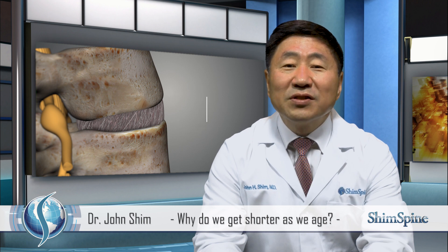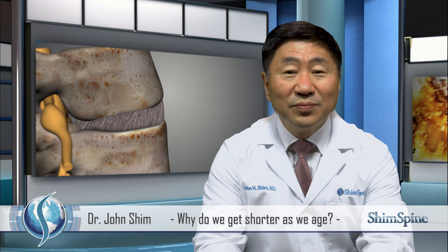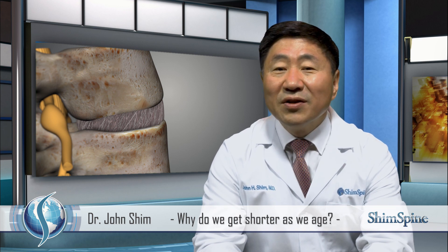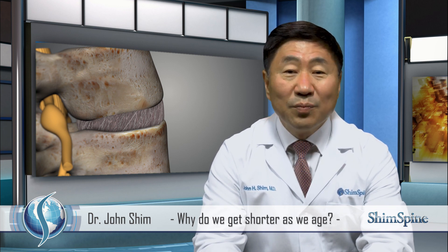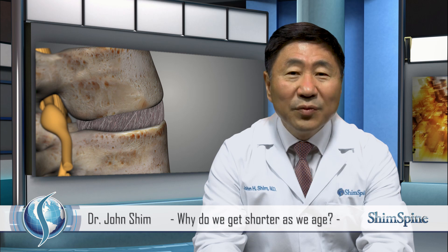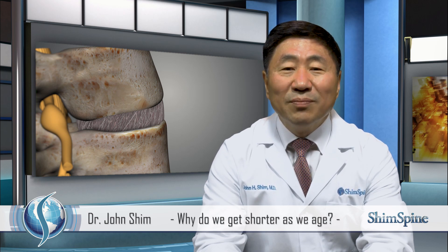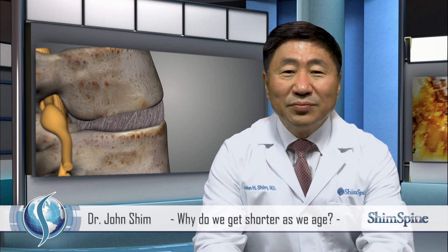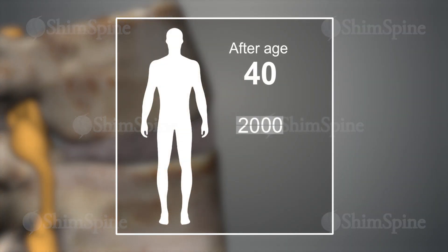Population studies have definitely demonstrated a narrowing and degeneration of the discs with age. Interestingly, not every disc in every person will narrow, but in general, the narrowing disc will occur in almost every person. The current conventional wisdom is that after age 40, we shrink an average of one-fourth to one-third of an inch every decade.